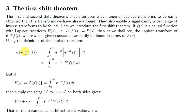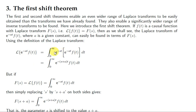We are going to get the Laplace transform of e to the minus at times any function f(t) in terms of F(s), where F(s) is defined to be the Laplace transform of f(t). So we apply the definition of the Laplace transform to what's inside the curly brackets here. That means we multiply by e to the minus st and integrate from 0 to infinity with respect to time.